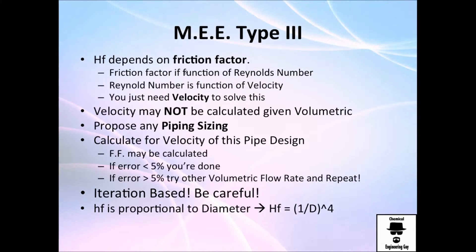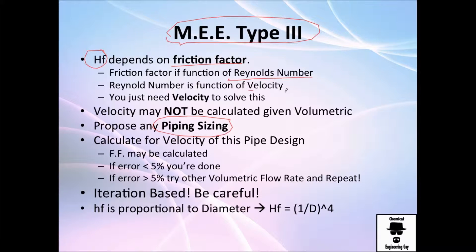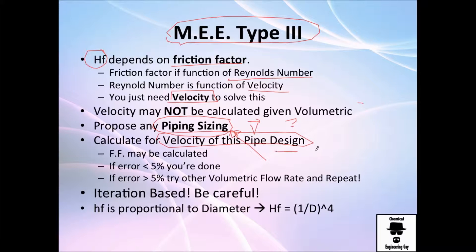What happens if we have no pipe sizing? This will be typical problem type number 3. Recall that friction loss depends on the friction factor, the friction factor depends on Reynolds number, Reynolds depends on velocity, and velocity depends on the size of the pipe. We will not have volumetric flow rate and therefore we will not have a velocity. We need to propose several pipe sizes, calculate the velocity for each, then calculate the left side and make sure it equals the right side. If it is not, recalculate everything; if it is right, you're done.